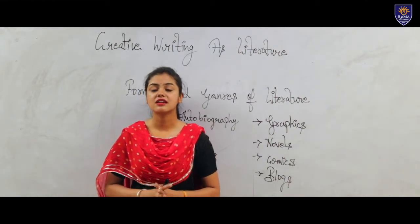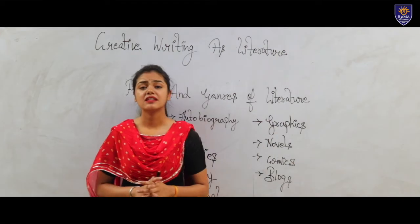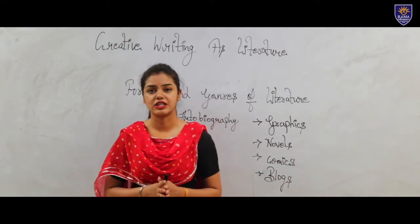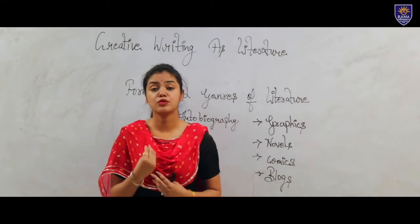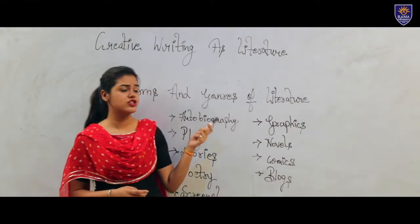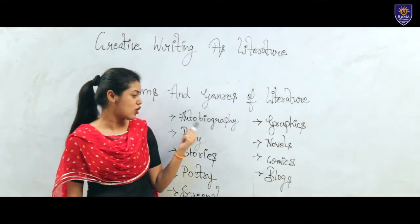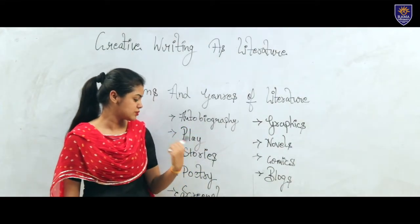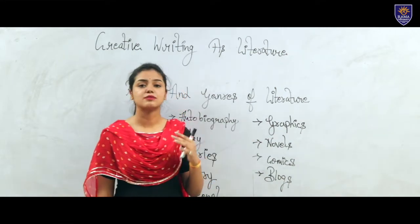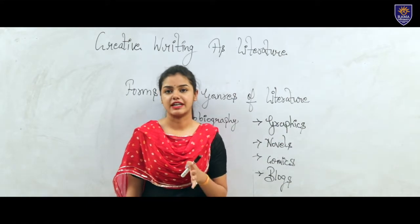Creative writing is an expressive form of literature. While writing any type of story, we use creativity or imagination, and we put an emotional touch towards a story. The forms and genres of creative writing include autobiography, play, stories, poetry, screenplay, novels, comics, and blogs. These are the different forms of creative writing.